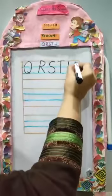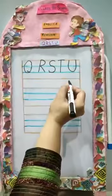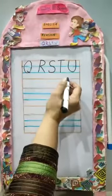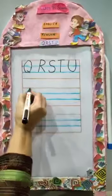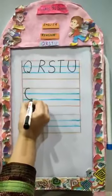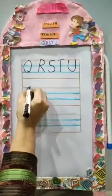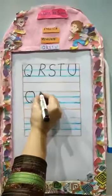And U — the sound of U is 'U' as in Umbrella. Now we will write like this on the whole page.